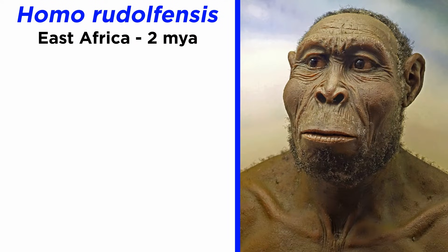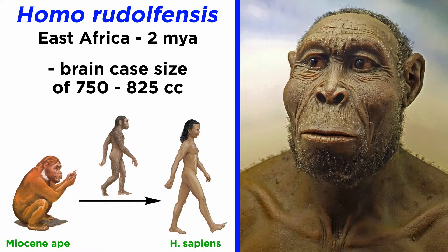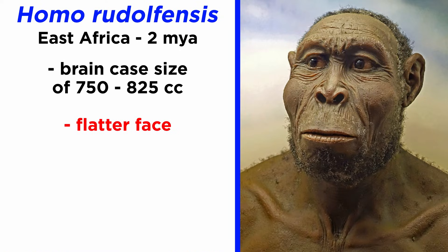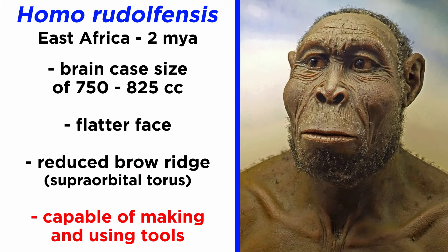Homo rudolfensis is also found in East Africa, and appears around 2 million years ago. Its brain is bigger than what we saw in Homo habilis, at a range of 750 to 825 cubic centimeters. At this point, hominins have crossed the midway point between Miocene apes and modern humans in terms of brain volume. Homo rudolfensis has a significantly flatter face than Homo habilis and evidently a reduced brow ridge, or supraorbital torus. This hominin is not directly associated with tools, but given its brain size and coordinates in time, it was certainly capable of making them.